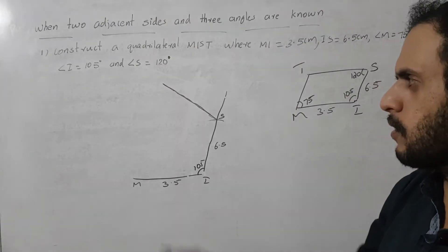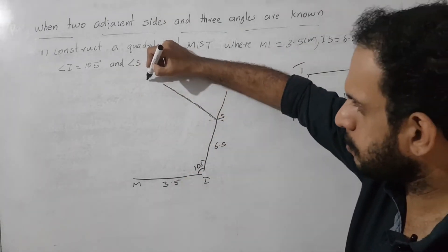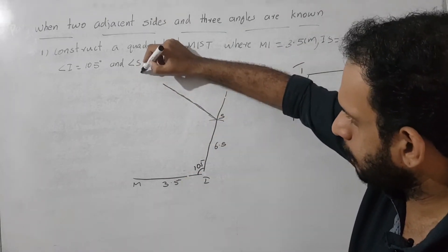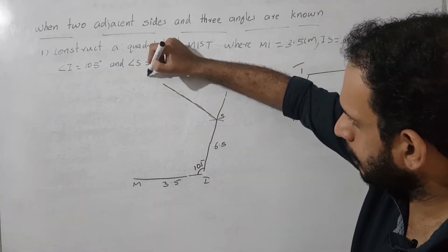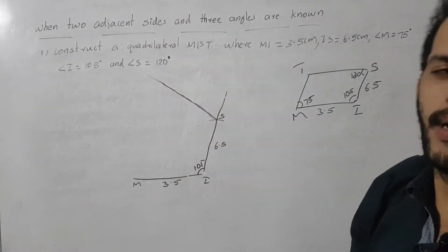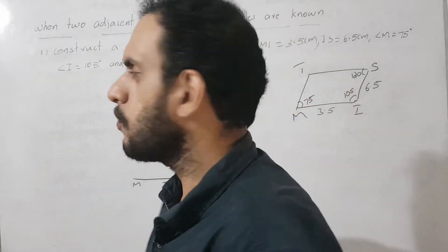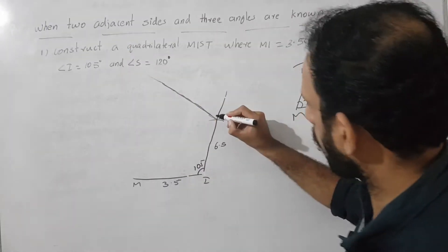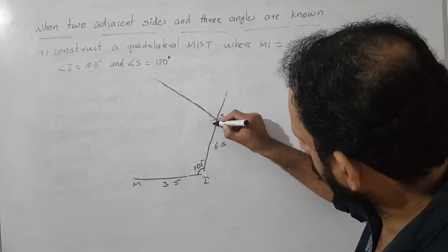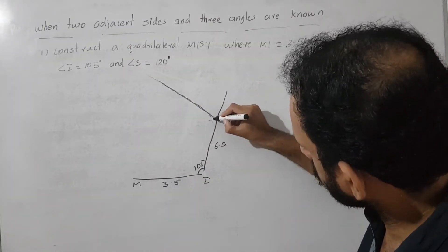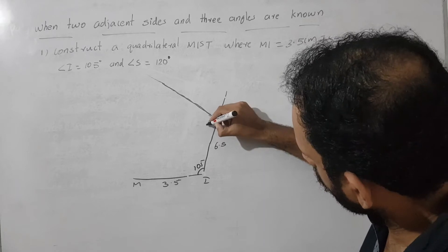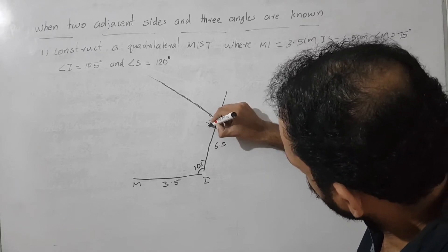We draw the line and stop it there. Then we mark the value — it is 120°.